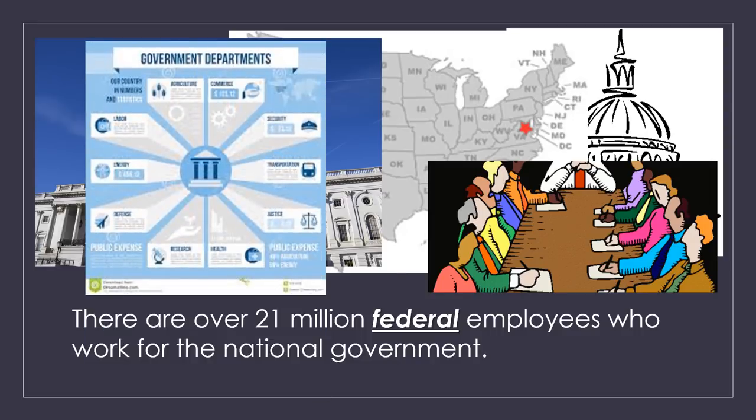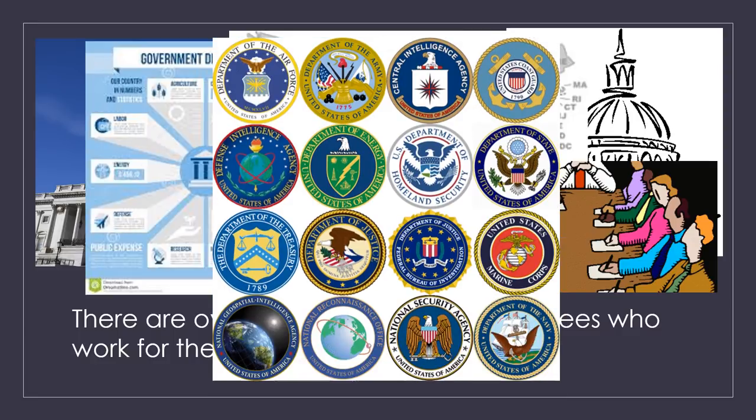We're going to learn about all sorts of these departments throughout our unit. You can see some of them there: the Air Force, the CIA, Department of State, Department of Justice, the Treasury. I'm sure many of your families are very familiar with some of these agencies and departments because I'm sure your family are employees of these departments.